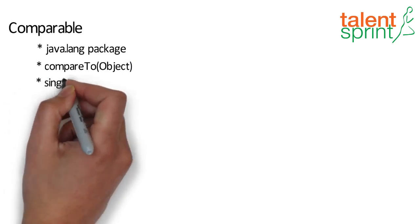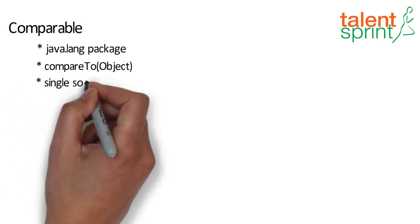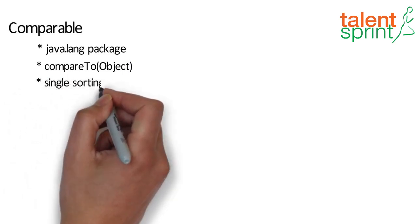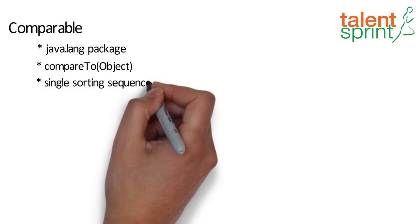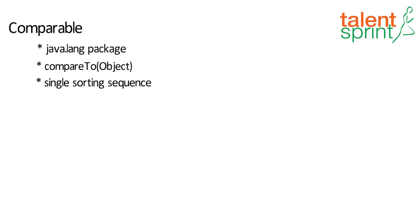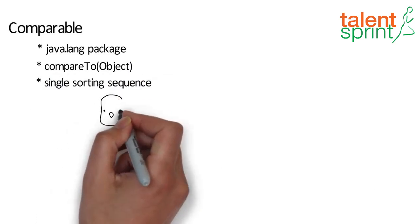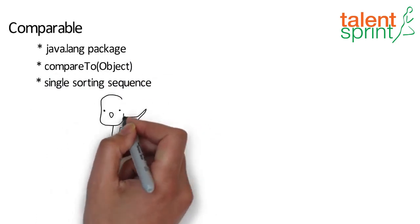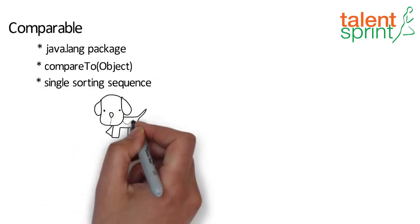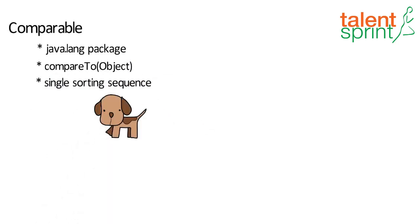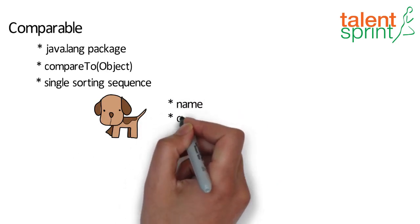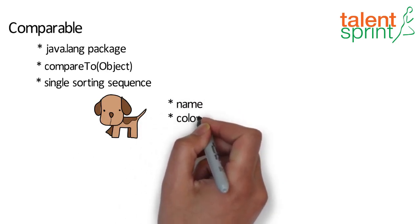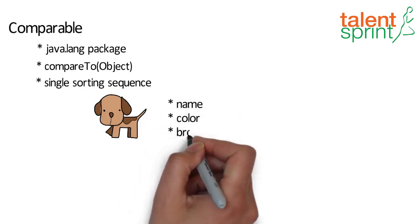It provides a single sorting sequence only — meaning you can sort elements based on a single data member only. For example, for the class Dog, you can either sort on the data member name, color, or breed.